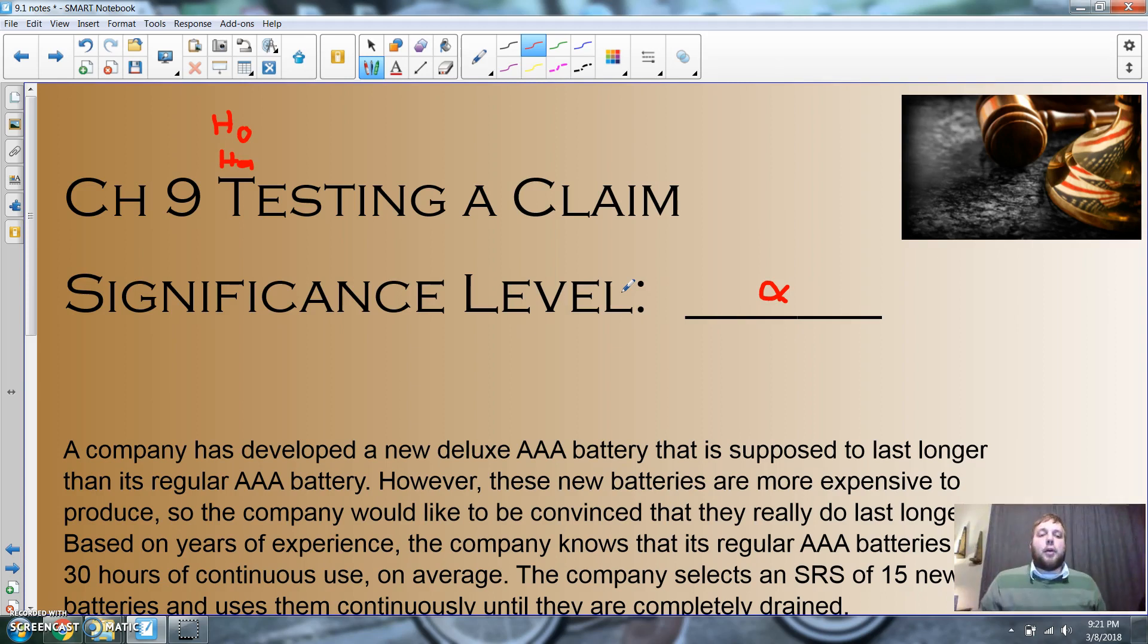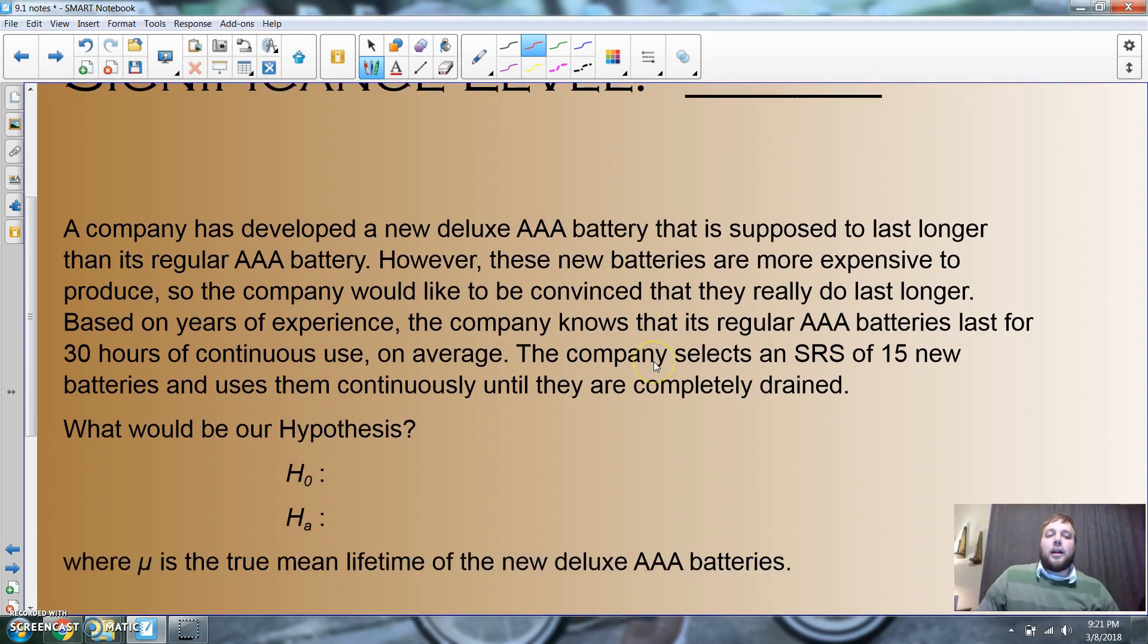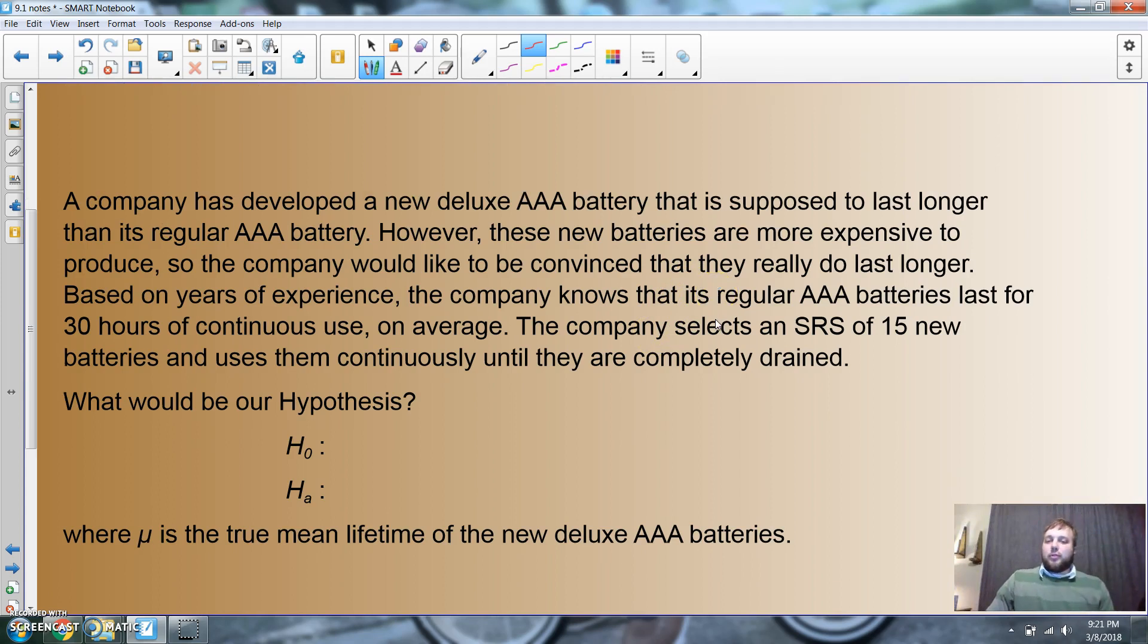For instance, a company has developed a new deluxe AAA battery that is supposed to last longer than regular AAA batteries. However, these new batteries are more expensive to produce, so the company would like to be convinced that they really do last longer. Based on experience, the company knows its regular AAA batteries last for 30 hours of continuous use on average. The company selects a simple random sample of 15 new batteries and uses them continuously until they're done.